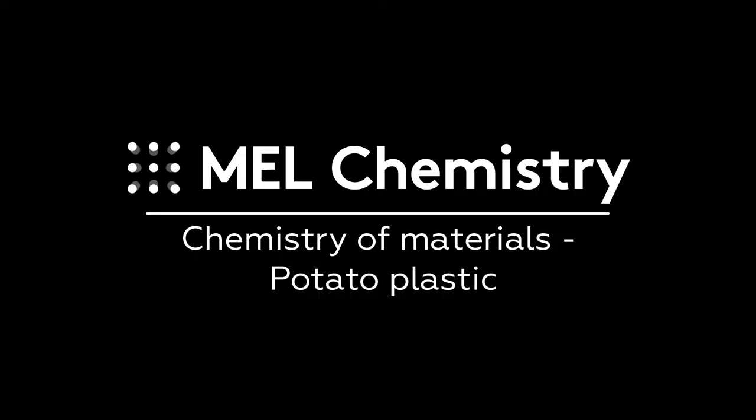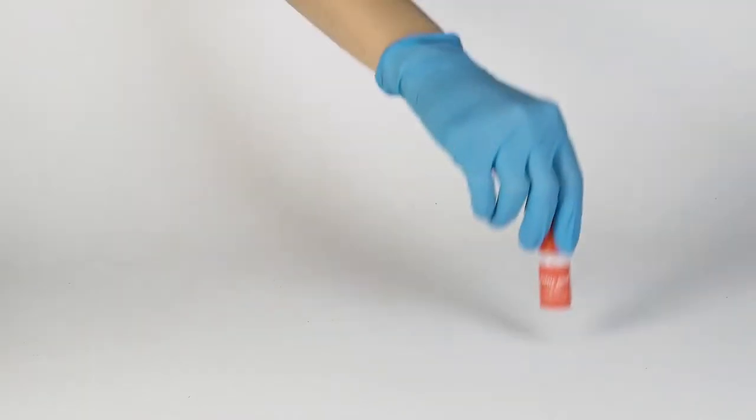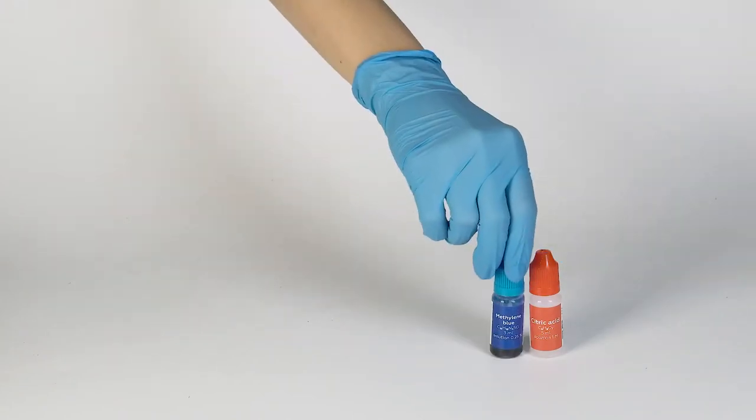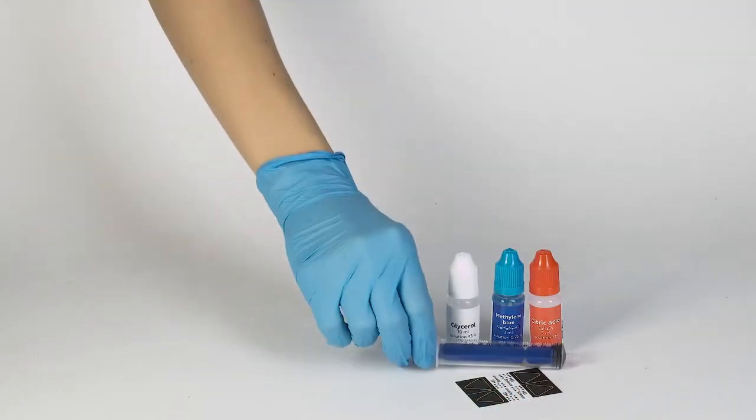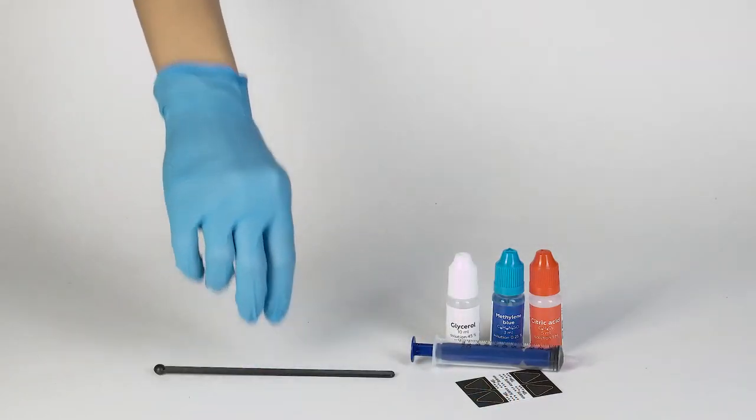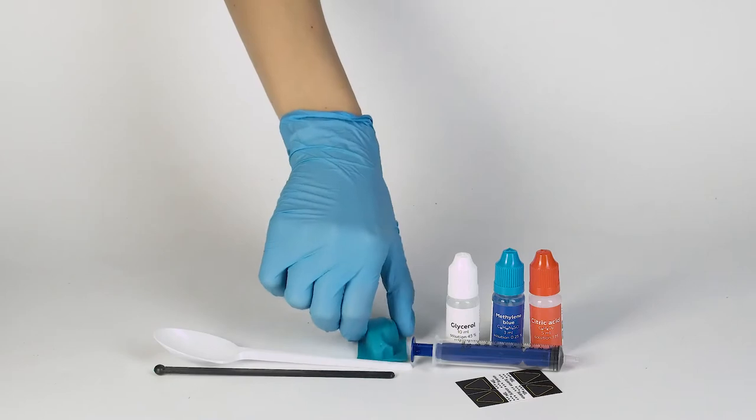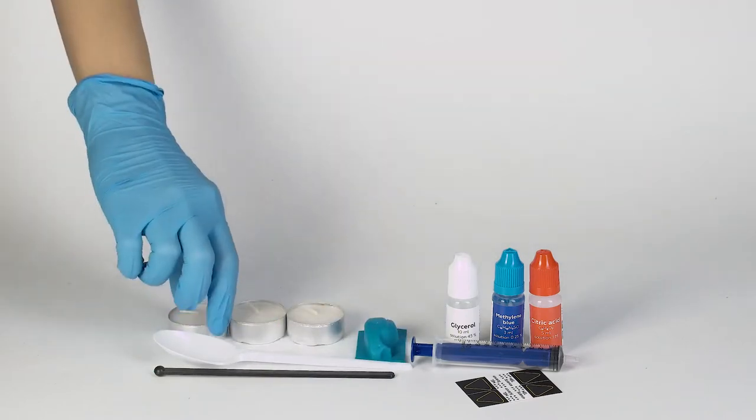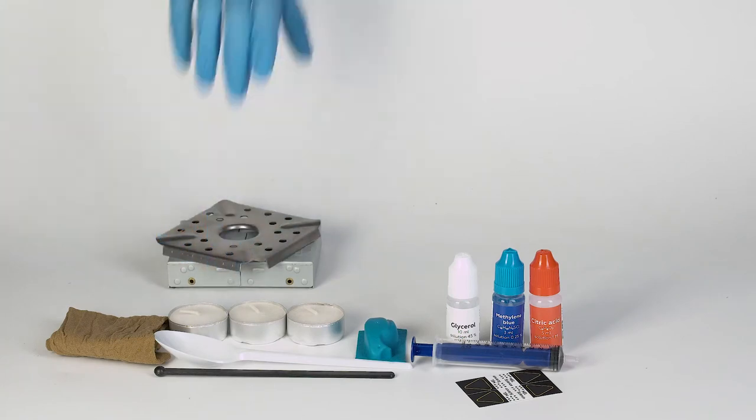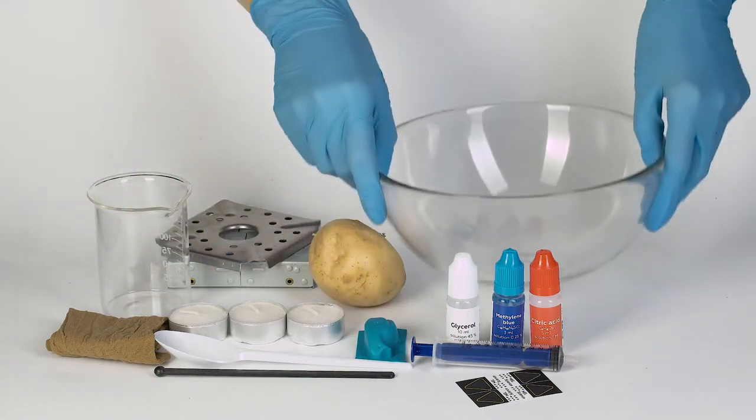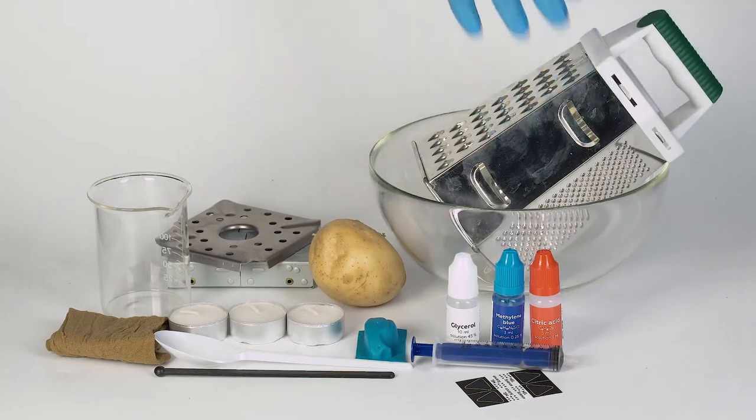For the potato plastic experiment, you will need the solution of citric acid, the colorant methylene blue, the solution of glycerol, thermostickers, a syringe without a needle, plastic stirring rod and spoon, a mold, three candles, a sock, a solid fuel stove and flame diffuser, a beaker, one potato, a bowl, a vegetable grater, and some matches.